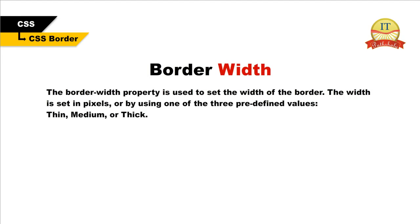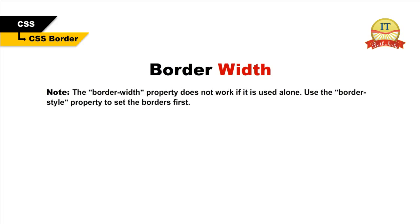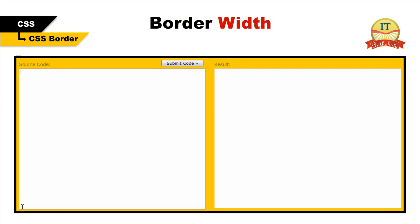Border width. The border-width property is used to set the width of the border. The width is set in pixels or by using one of the three predefined values: thin, medium, or thick. The border-width property does not work if it is used alone — use the border-style property to set the borders first. Let us look at an example to understand it.